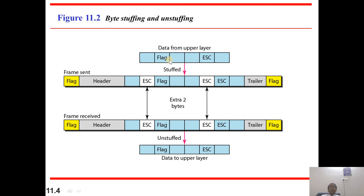By stuffing and unstuffing data from the upper layer, we add escape characters. The escape characters allow for the data field — the escape field will be treated as extra, and we add the header, trailer, and flag field. This is the beginning flag field and this is the end flag field. A frame will be sent with two extra escape bytes.